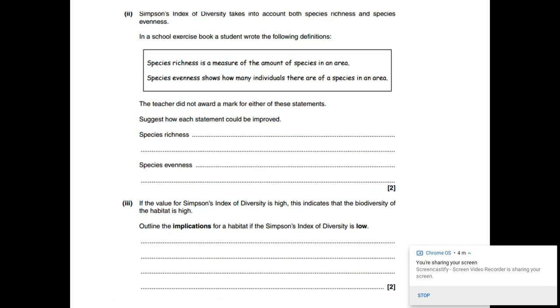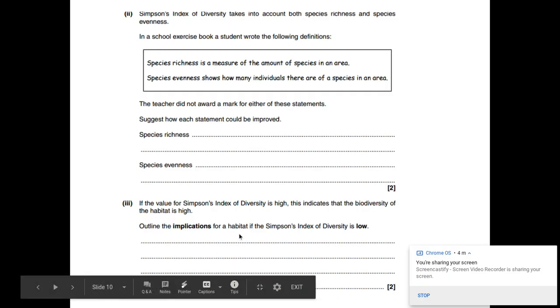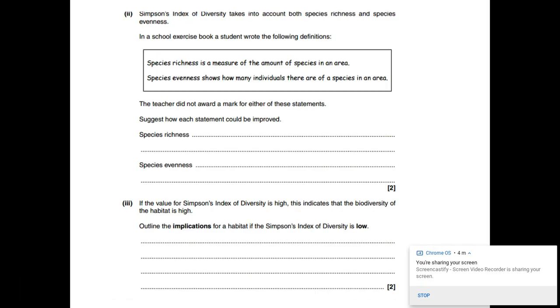So here is another example of an exam question if you want to pause it and have a go. You do need to know the difference between species richness and species evenness, which was the specification point C. So pause that one and have a go. You do need to know, like at the bottom here, the implications of a low and a high number. So this one's asking us about a low Simpson's index. The previous question was asking about us a high.